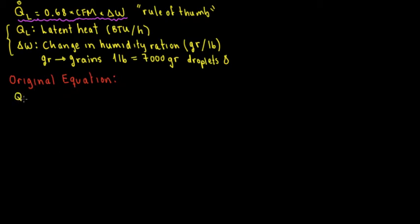We have that Q latent heat is equal to mass times specific latent heat — Q = mL. Anything specific is divided by mass: L is the specific latent heat, which equals latent heat divided by mass. Specific volume is volume divided by mass. Specific enthalpy is BTUs divided by mass per pound. So anything specific is divided by mass. Therefore Q equals M times L, meaning latent heat equals mass times specific latent heat.